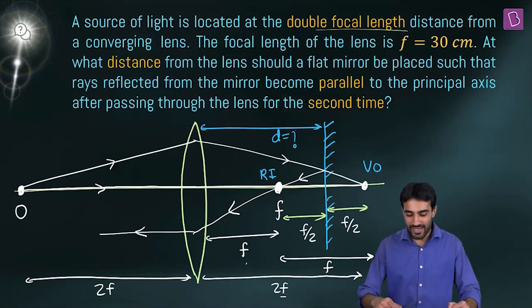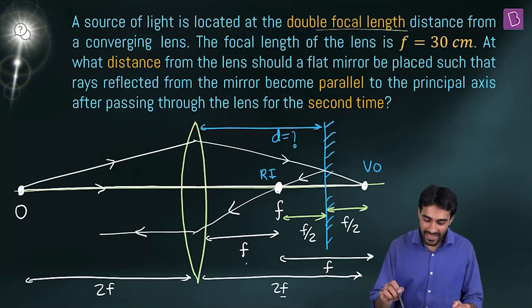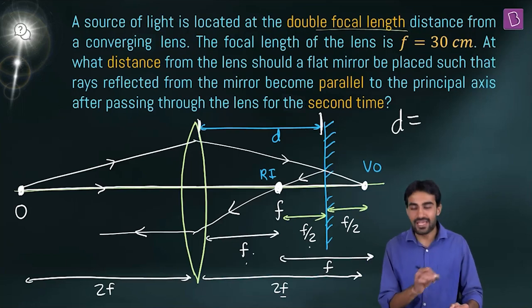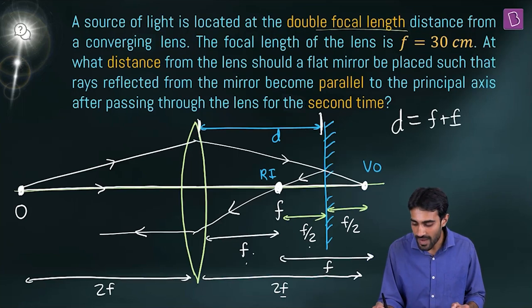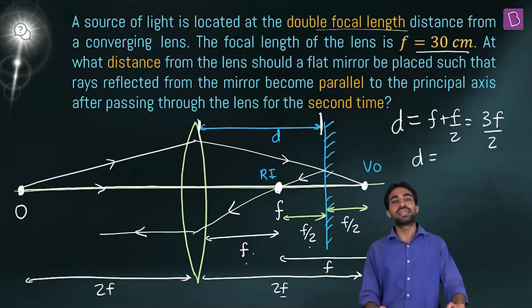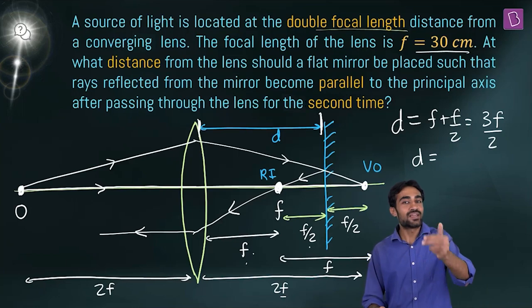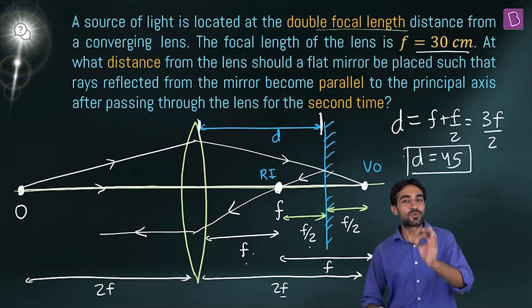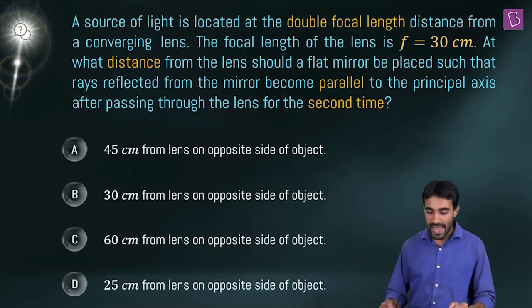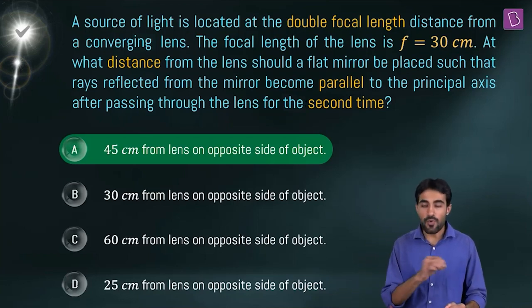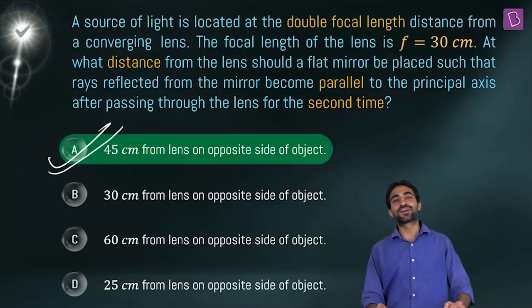The distance d from the lens to the mirror is f + f/2 = 3f/2. With f = 30 cm, d = 3 × 30 / 2 = 45 cm. Option A — 45 cm from the lens on the opposite side of the object — is the right answer.